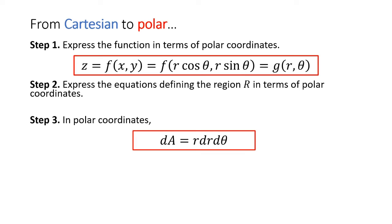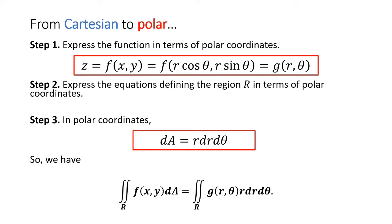For our convenience in MATH 28, we only use dr dθ as the order of integration in polar. So now we have the double integral of f(x, y) over R as a double integral of g(r, θ) · r dr dθ over R in polar.